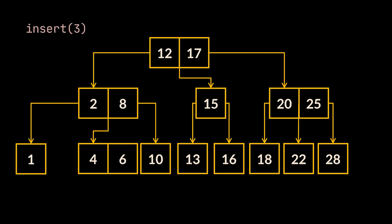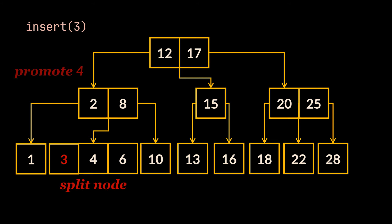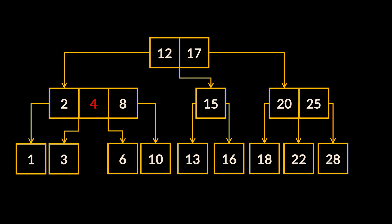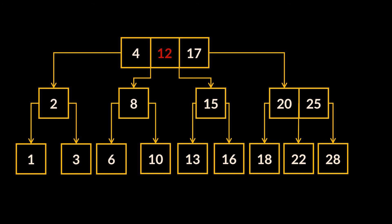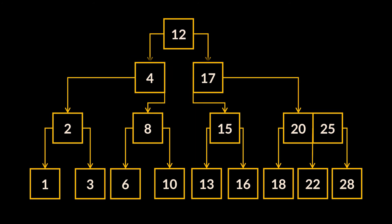As a second example, suppose we want to insert the item 3. This element fits in the spot marked in red, but because that node already contains two elements (m minus one), we split it and promote its middle element — 4 — to the parent node. However, the parent already contains two elements, so we split the parent as well and promote its middle item to its parent, which is the root. The root is full too, so we split the current root and promote its middle element to a new node which becomes the new root. The final tree preserves all B-tree conditions and is valid.